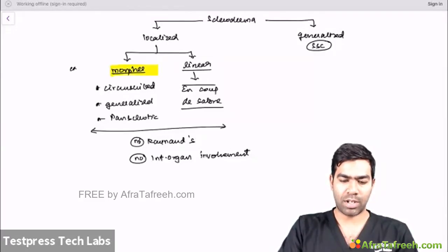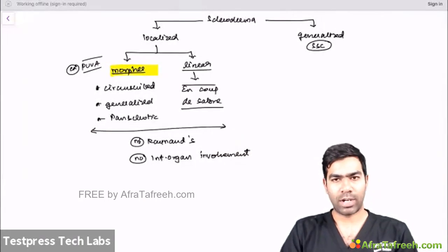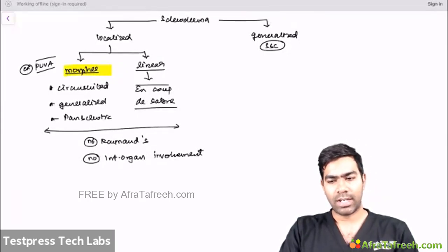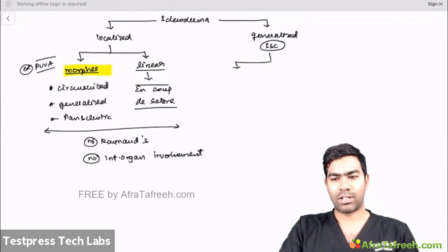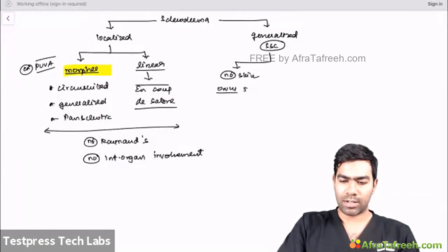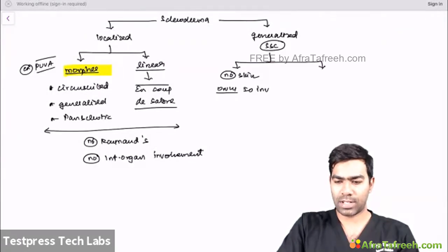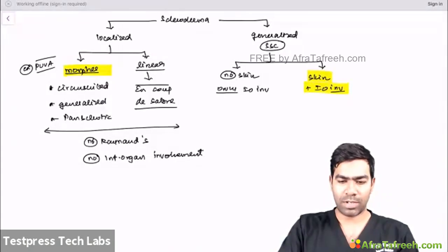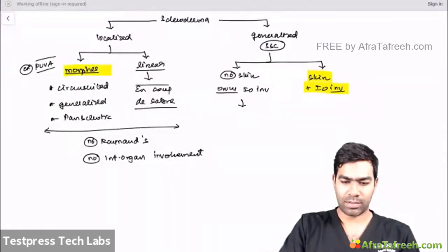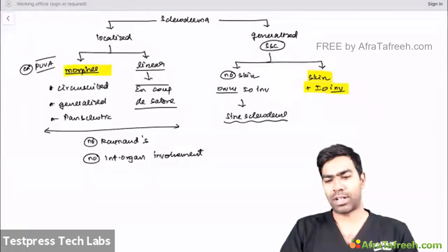Generalized scleroderma with skin and internal organ involvement can be further divided into diffuse and limited forms. If the skin involvement extends to proximal areas (beyond elbows and knees), it is diffuse scleroderma. If limited to distal areas (distal to elbows and knees), it is limited scleroderma. Face and neck are exceptions — they can be involved in both limited and diffuse varieties. There is also 'sine scleroderma' — internal organ involvement only, with no skin involvement — a very rare and difficult-to-diagnose form.